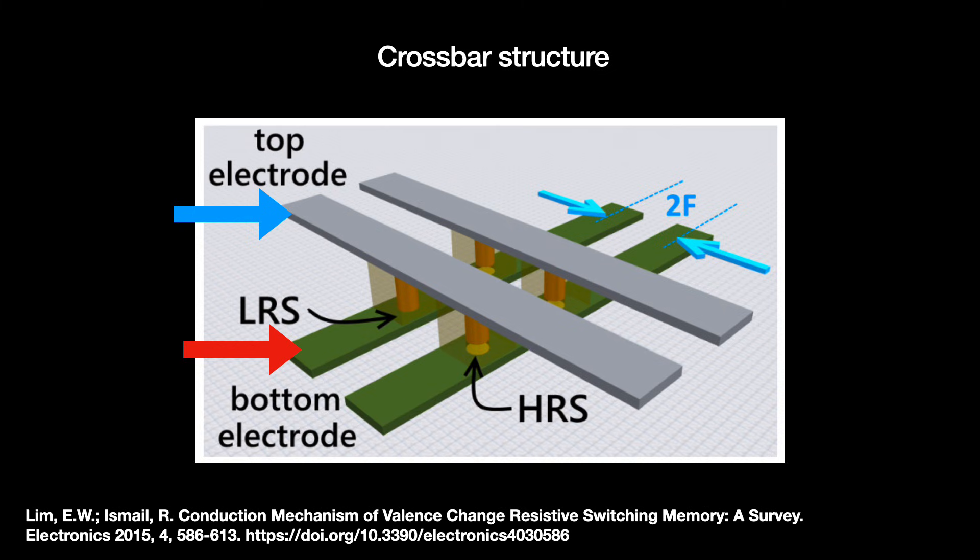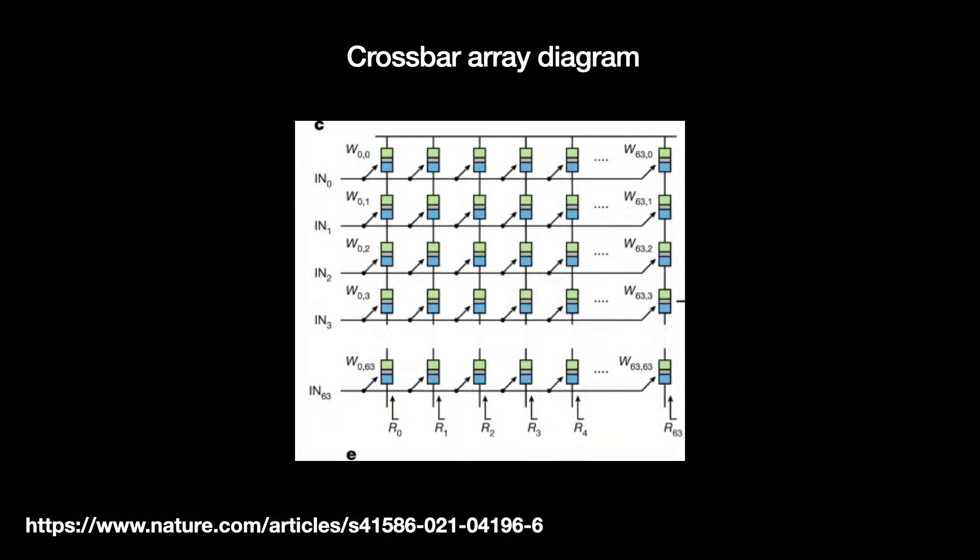When we want to read the data value of one memristor, we run a sensing voltage, specifically tuned for measuring things, through the top wire. That voltage travels into the memristor and then through it into the bottom wire, which we can measure in order to get the memristor's resistance value.